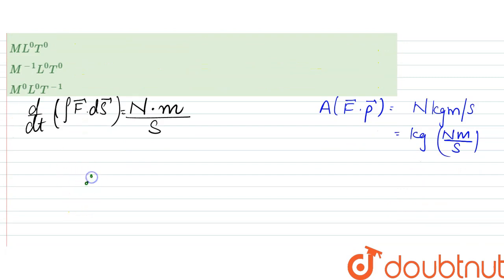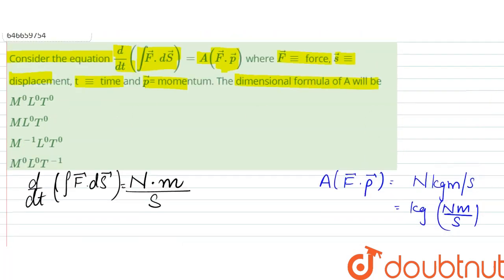So, therefore, A has a unit of kg, which is nothing but m power 1, l power 0, t power 0. So, the answer would be m¹l⁰t⁰. So, option B is the correct answer. Thank you.